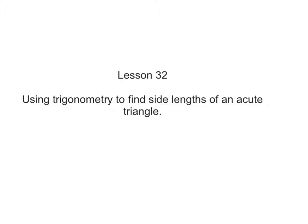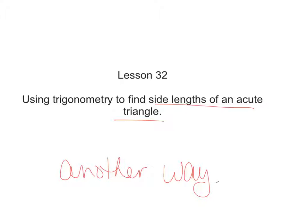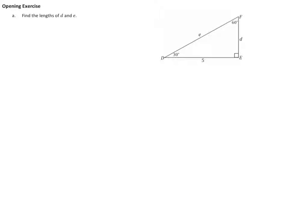Alright geometry, we are taking our trig one step further and we're going to find side lengths of an acute triangle in another way. How many different ways can we do it? This is sort of fun and different. Your opening exercise — go ahead the best you know how, however you want. Find the lengths of D and E. I'm going to push pause, I want you to do this on your own as a review. You don't have to simplify anything, just find lengths D and E.